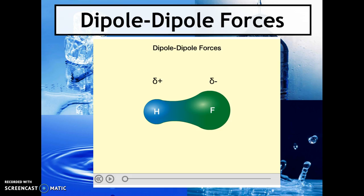What will have a higher boiling and melting point — something ionic, polar, or nonpolar? Ranking them: ionic bonds have the highest melting point because they have literally different charges. Polar is next because they act like they have different charges. Nonpolar is last because they have no attraction to one another.